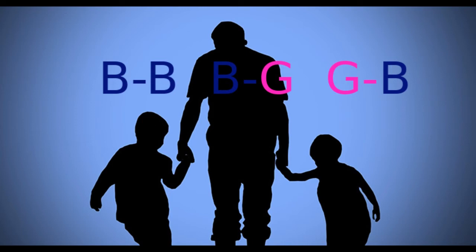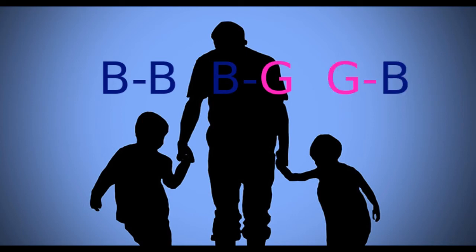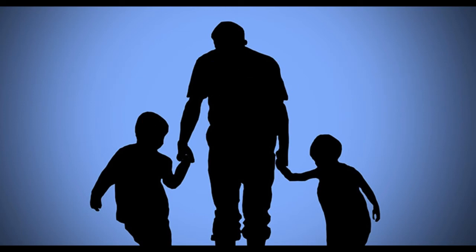Now, if we were to reframe the question as 'the Smiths have two children, the elder of whom is a boy,' then we could discount the girl-followed-by-a-boy possibility, and the chance of Mr Smith's other child being a girl is, of course, 50%. But if all we know is that one of the Smith children is a boy, then the chances are two to one in favour of the other being a girl. It may be counter-intuitive, but I hope you can see why it's so.